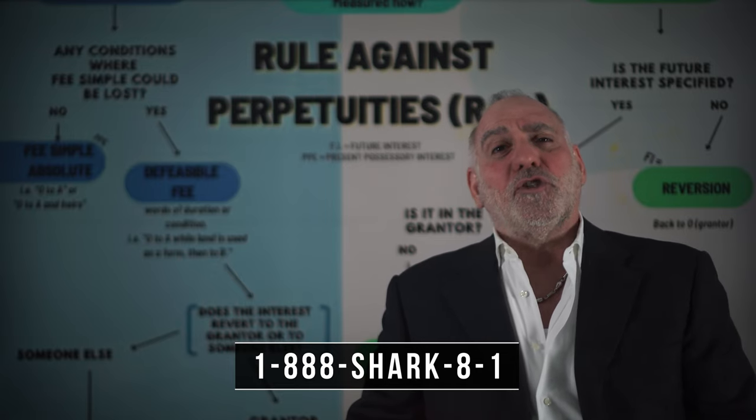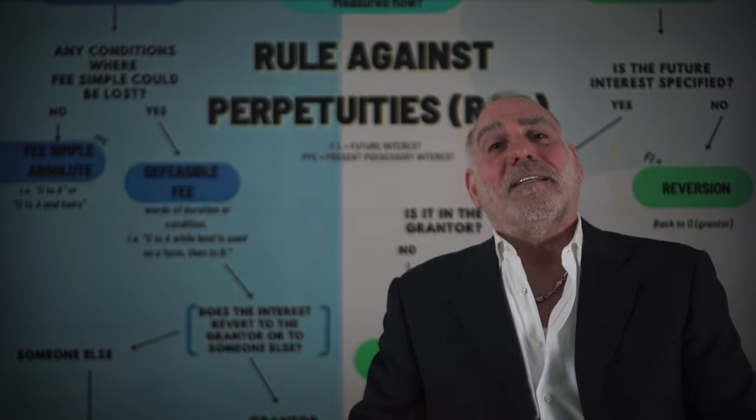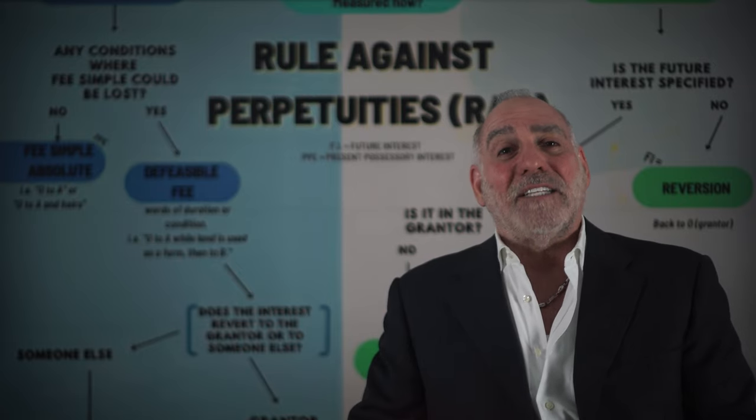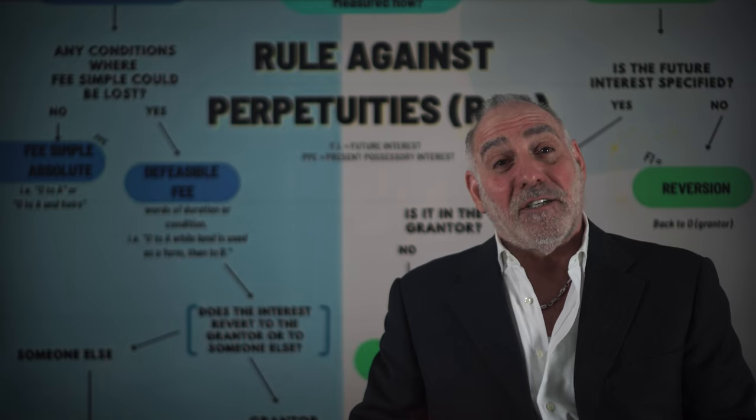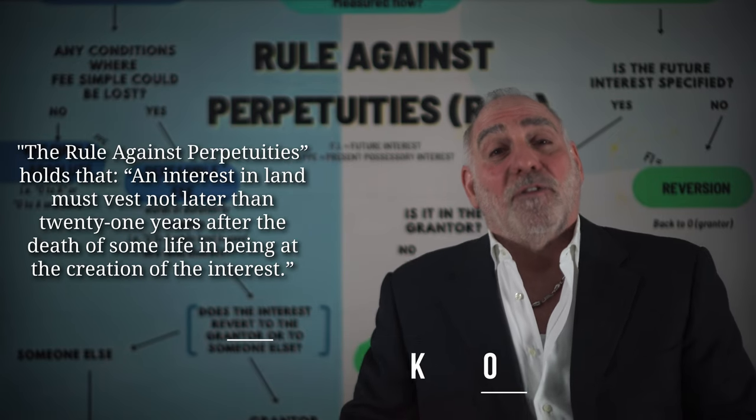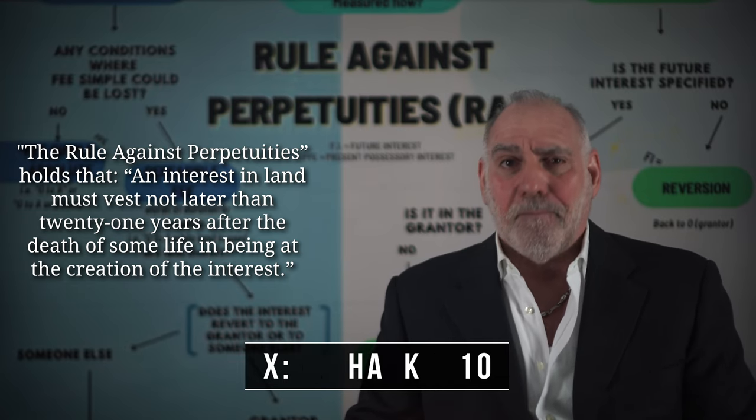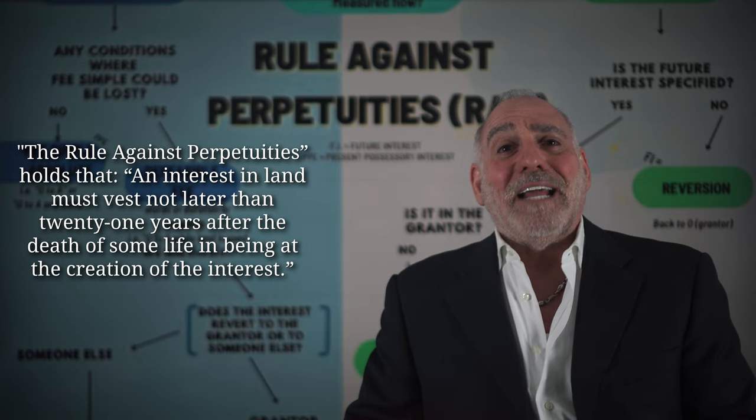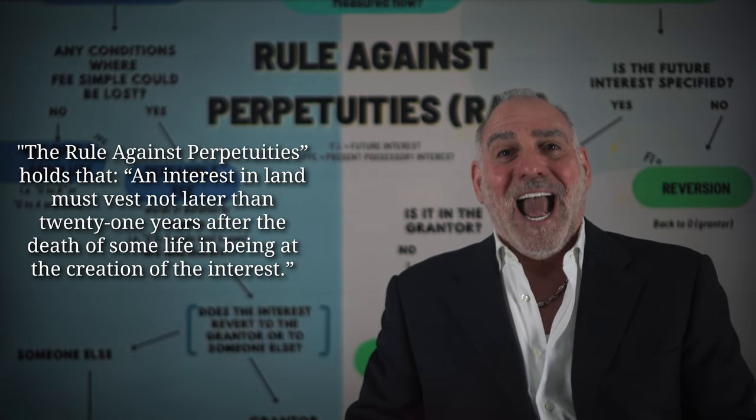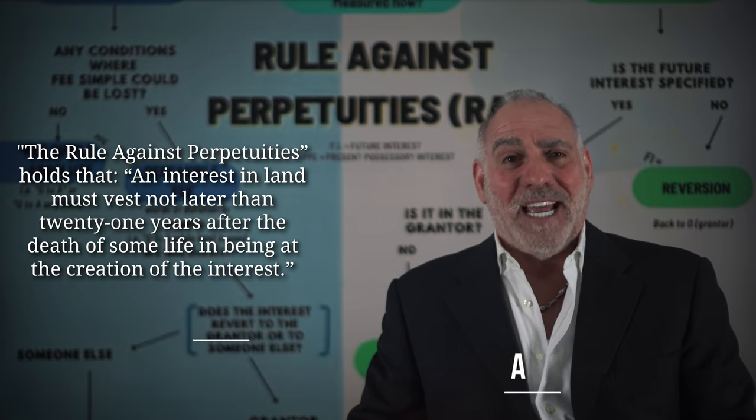One of the most disturbing concepts that any law student is forced to grasp is a little ditty known as the rule against perpetuities. What is the rule against perpetuities, you ask? Okay, masochist, the rule against perpetuities is an archaic mandate that, and I'm quoting here, an interest in land must vest no later than 21 years after the death of some life in being at the creation of the interest.